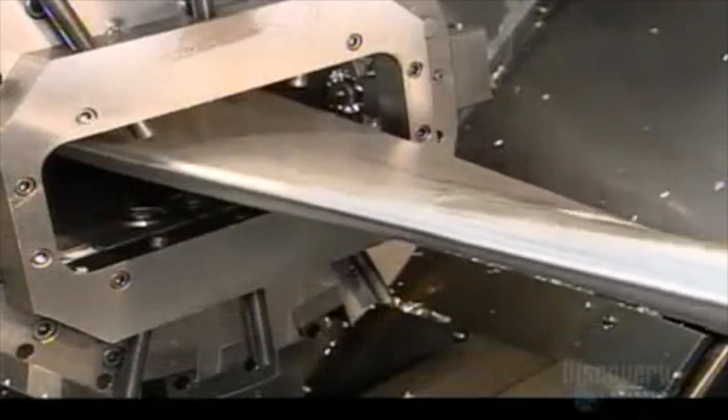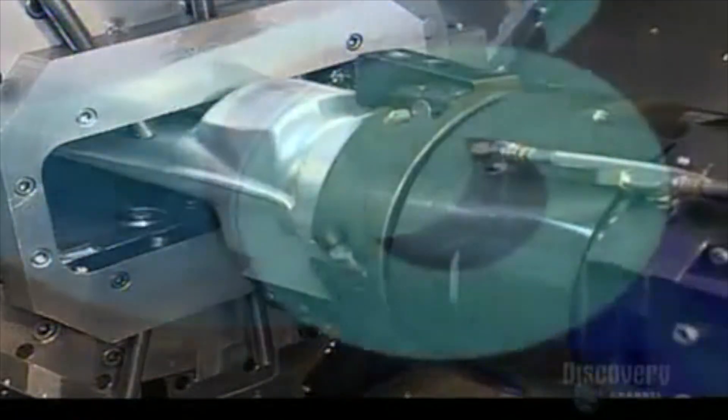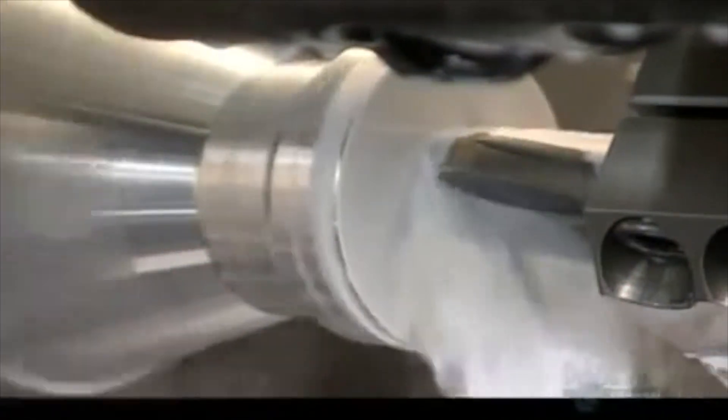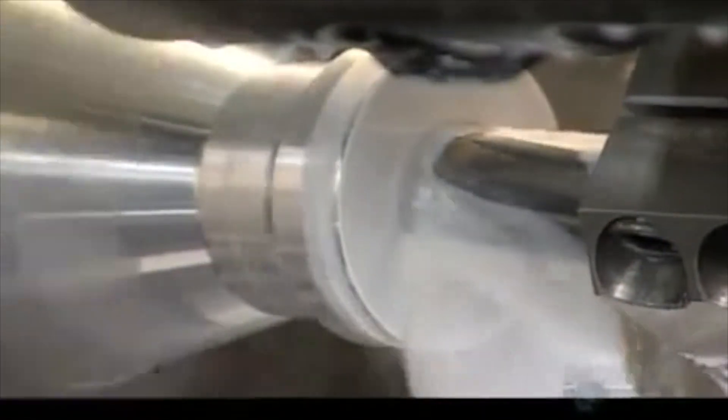This roughly shaped piece is about to become one of the propeller's blades. A computer-guided lathe machines it to the final shape. Liquid lubricant washes away the metal shavings and cools the friction-generated heat. The lathe first forms the shank, the end of the blade, that fits into the hub.